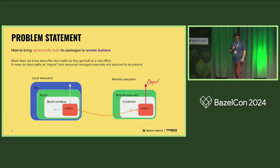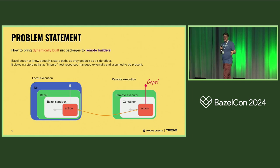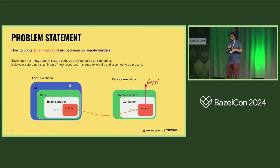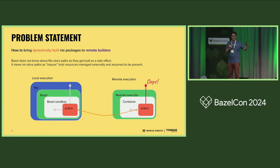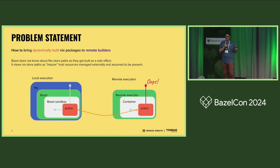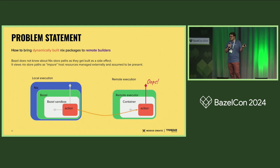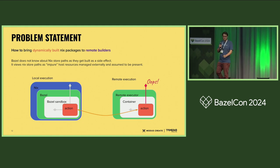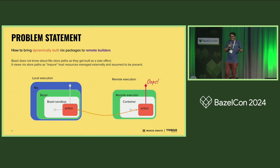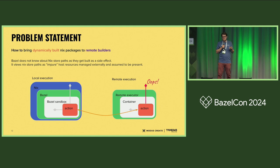Now the problem statement in the right setup. What we have is dynamically built Nix packages, and these happen as a side effect of running a repository rule on the local machine. That repository rule brings Nix packages into the scope and environment of the build, so that whenever an action runs, it will magically see the Nix package in the environment. Of course, if you take that action and move it to the remote execution environment, there is no reason why Nix should be there.